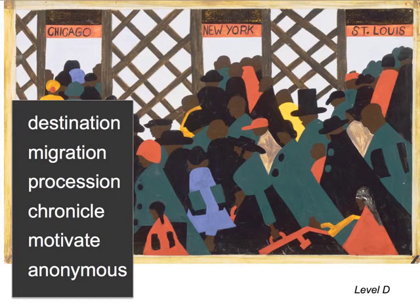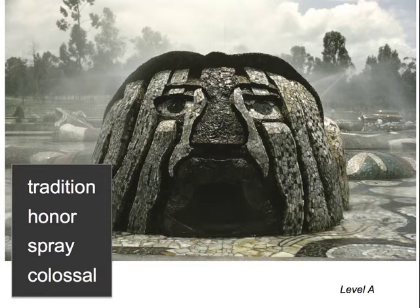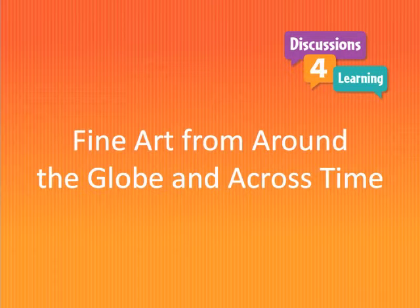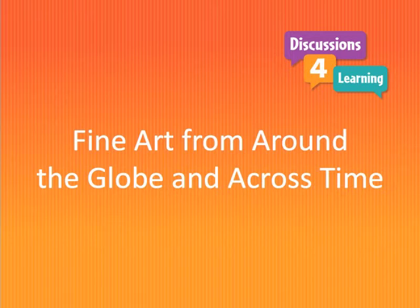This artwork is from Jacob Lawrence's famous migration series. Diego Rivera's sculpture provides a great context for learning and remembering the word 'colossal' — this truly is a colossal head. The fine art includes artworks from around the globe and across time, including this sculpture from ancient Egypt, a great image for learning the words 'formal' and 'procession.' Students discuss the fact that the people in the procession are bearing gifts.